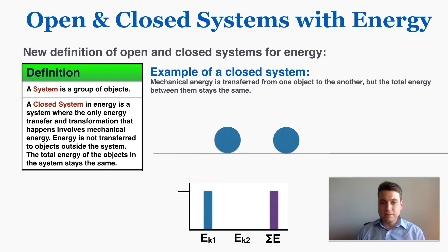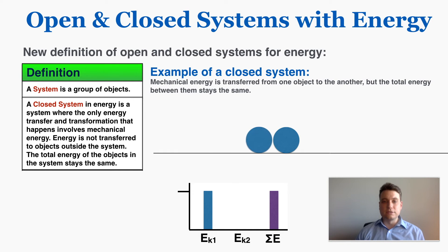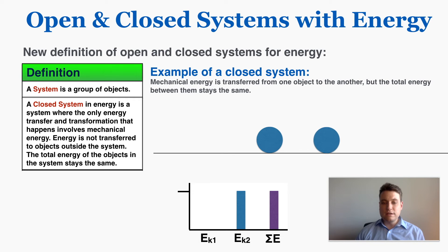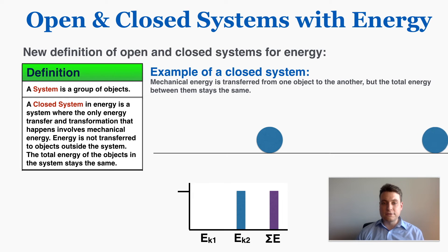Another example of a closed system is when mechanical energy is transferred from one object to another. In a perfectly elastic collision between two identical spheres, one sphere gives the other its kinetic energy, but the total amount of kinetic energy between them remains the same. This is true for all elastic collisions.